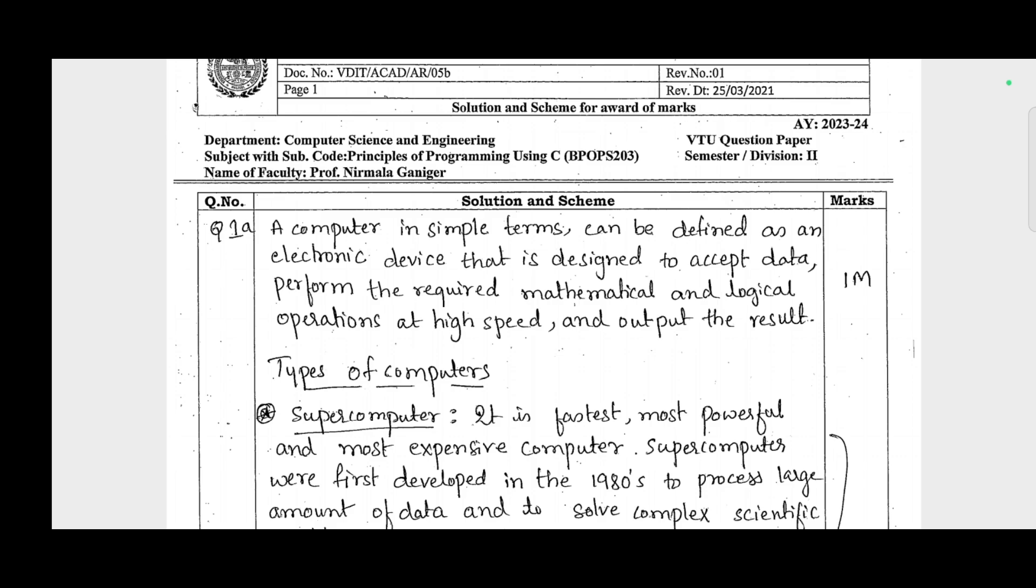It consists of two marks. They have written here by mistake one mark, but this consists of two marks. The definition part is two marks and rest of the question is explain the various types of computers.